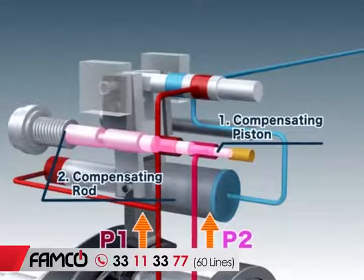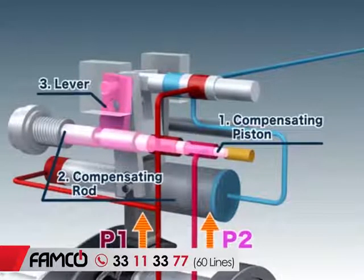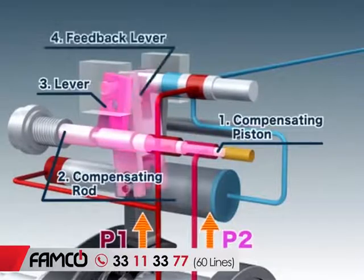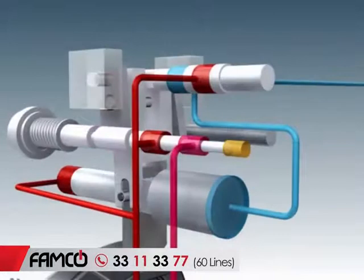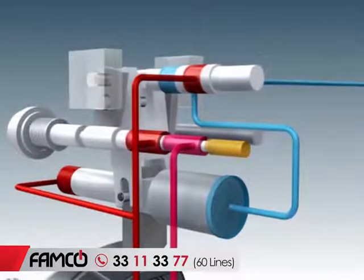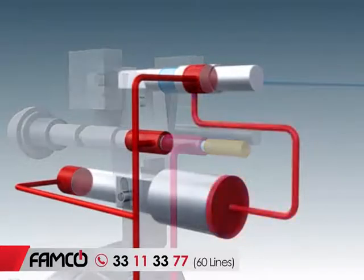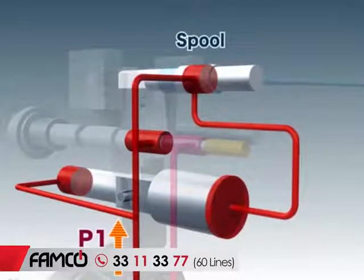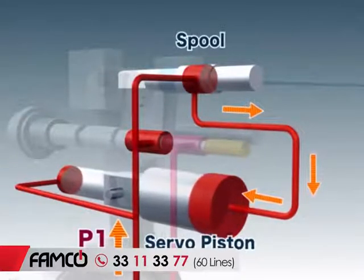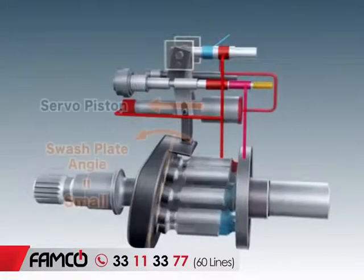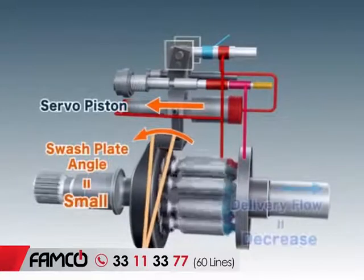As the compensating rod is pushed, the lever rotates, moving the feedback lever, which in turn moves the spool. Also, the delivery pressure of P1 passes through the spool and pushes against the larger side of the servo piston. As the servo piston moves, the inclination of the swash plate decreases, reducing the delivery flow.